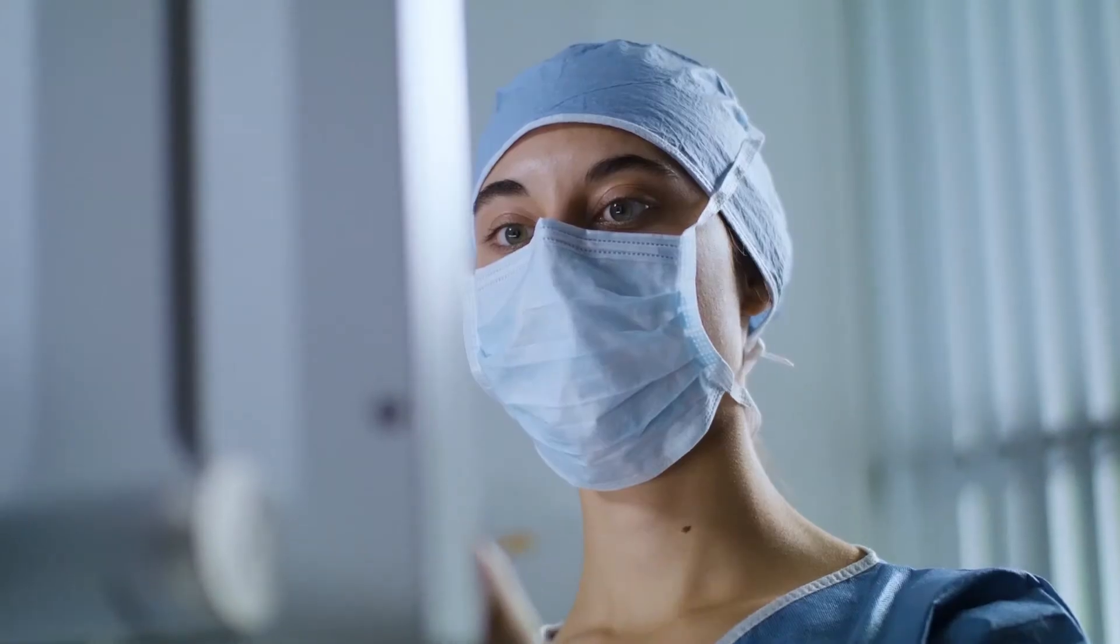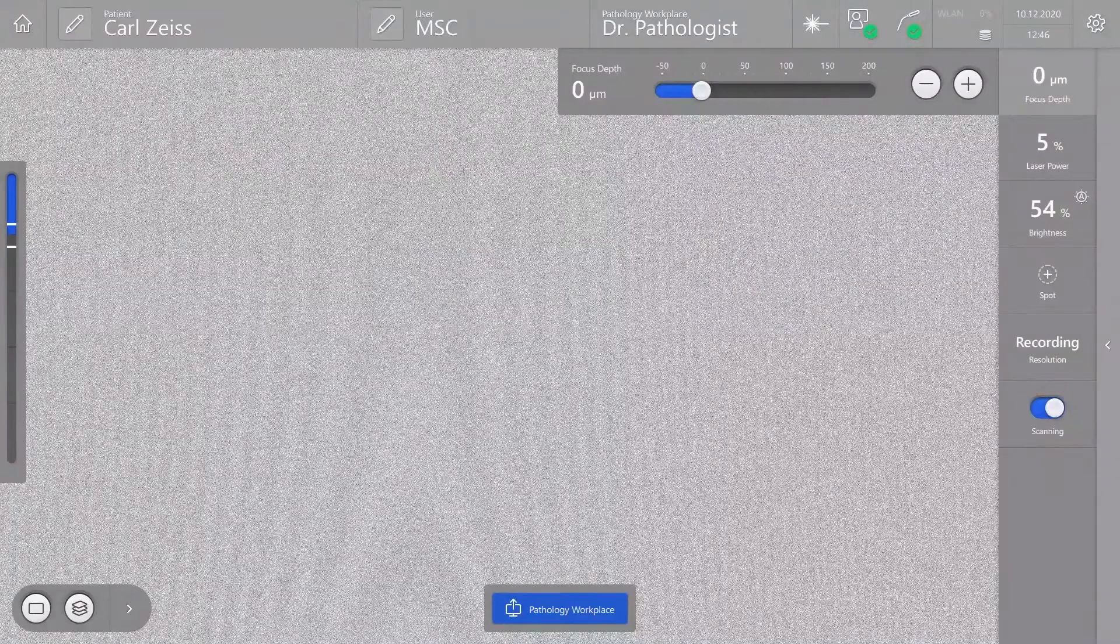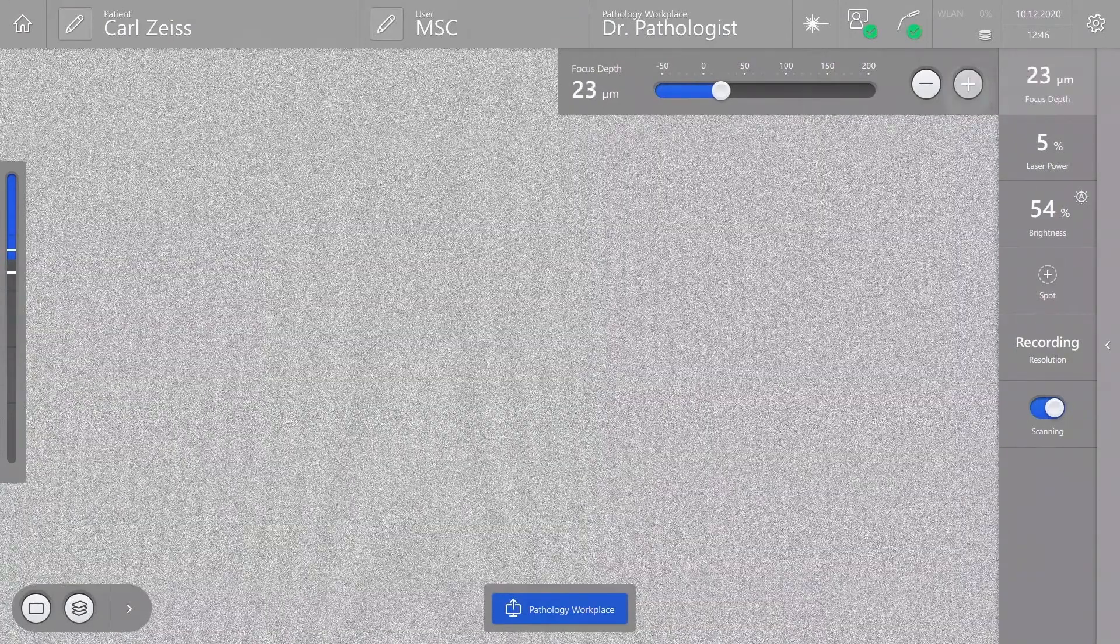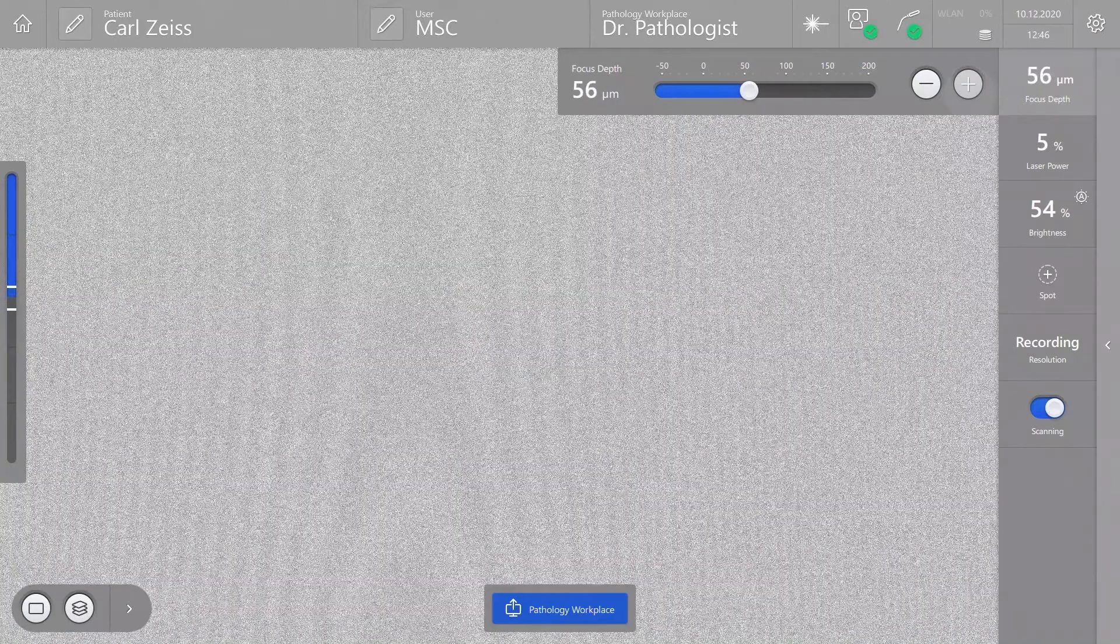Convivo allows for scanning in a focal depth range from minus 50 to 200 micrometers. In order to generate well-focused images of the scanned tissue, it is important to know at which focal depth the front glass of the sterile sheath is located.